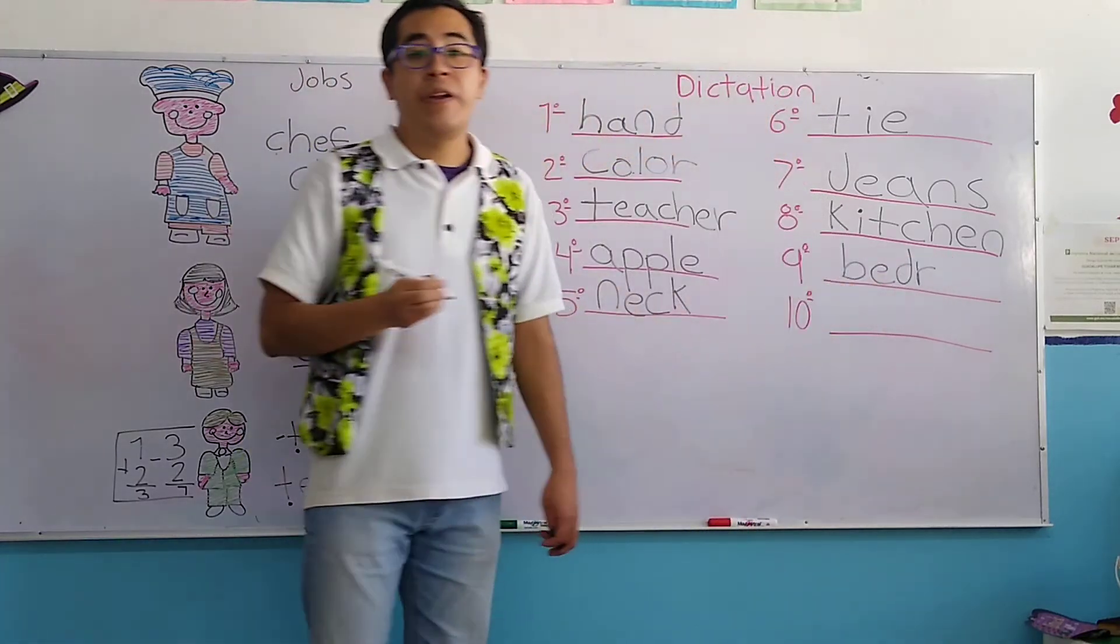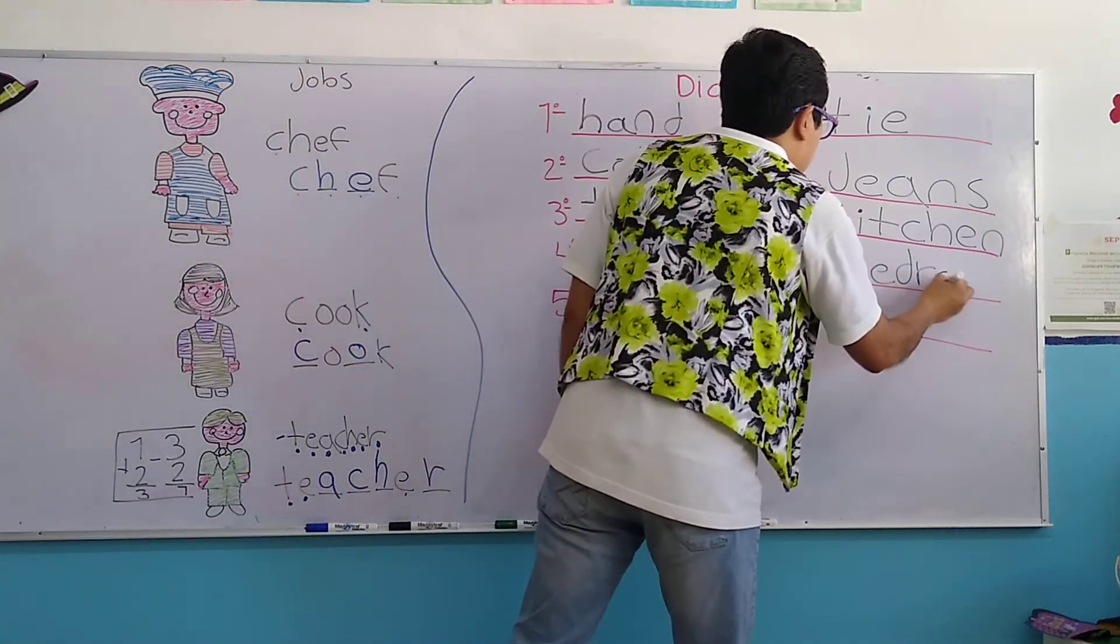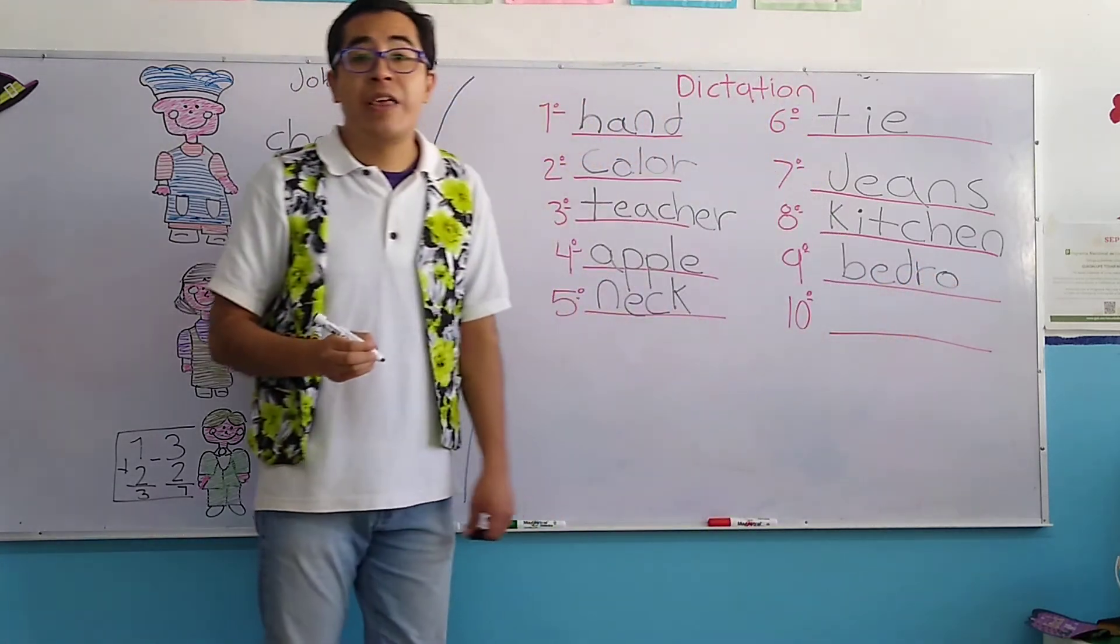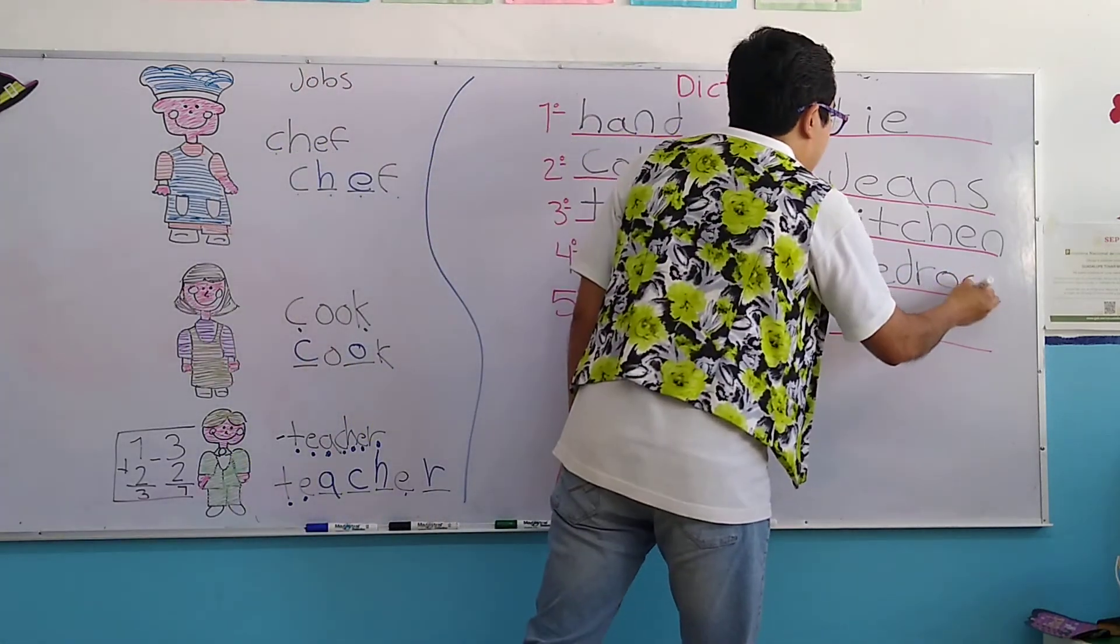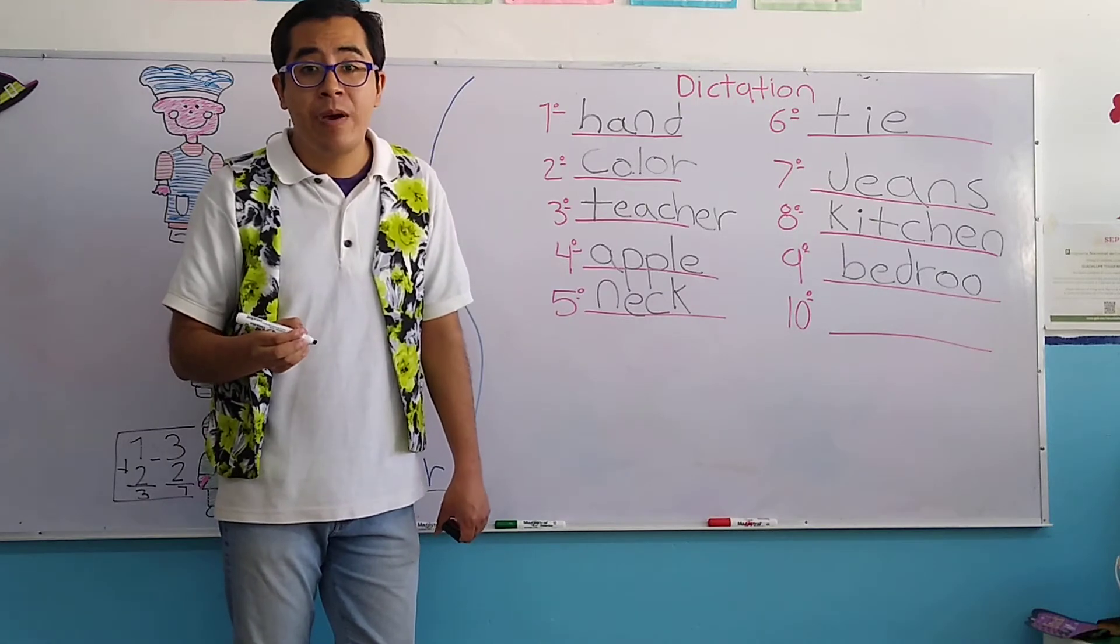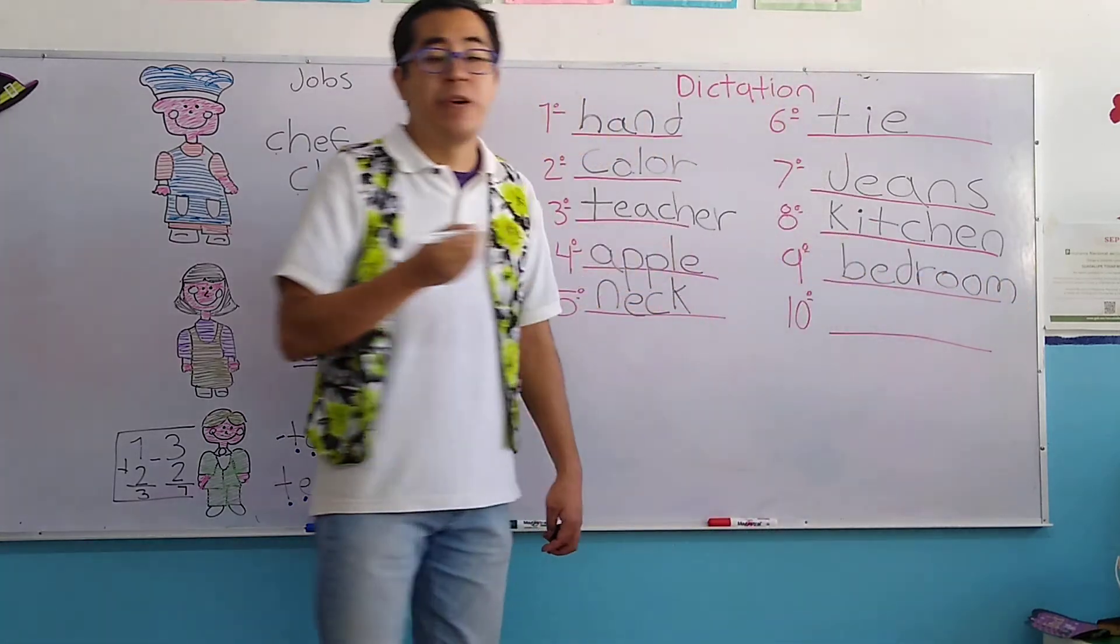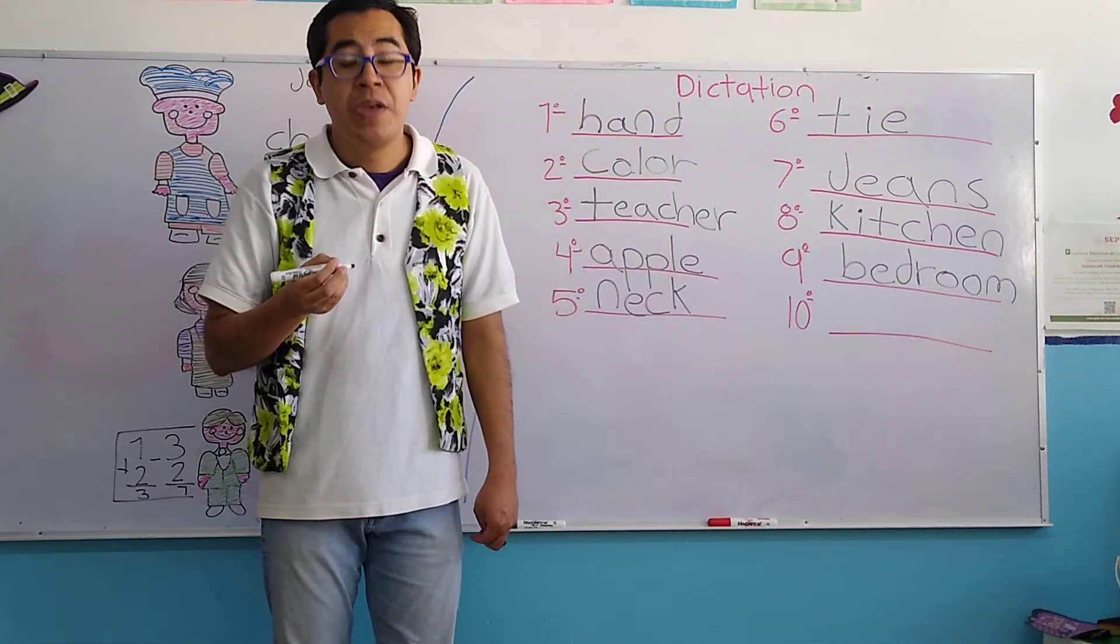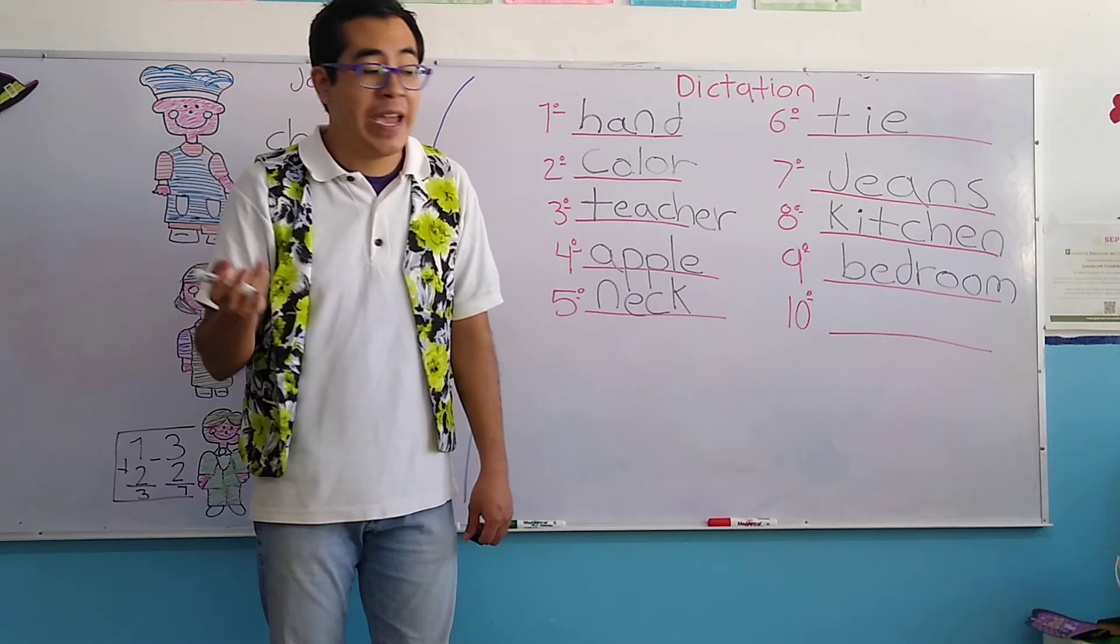Letter O of Oscar. Another letter O of Oscar. And the final letter, letter M of Mother. And the word is bedroom. Don't forget that the bedroom is a part of the house. Okay?